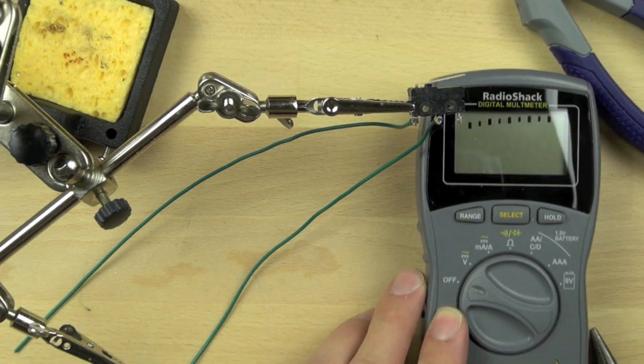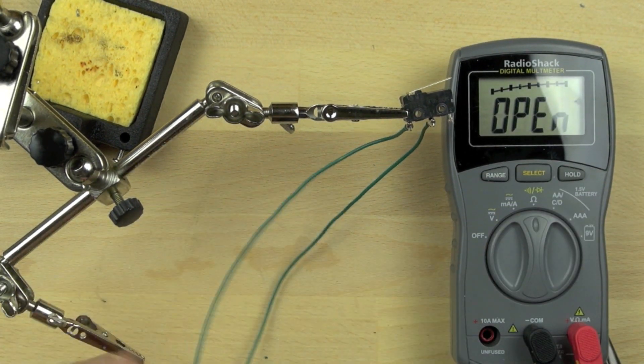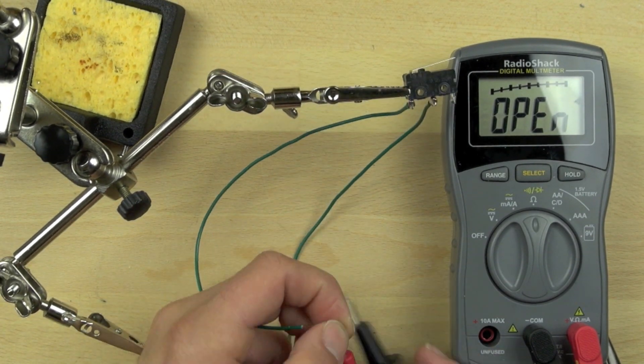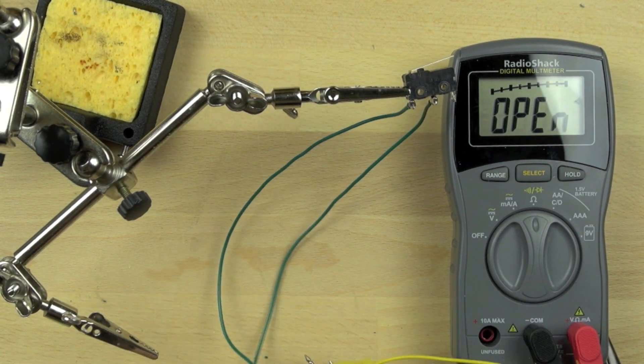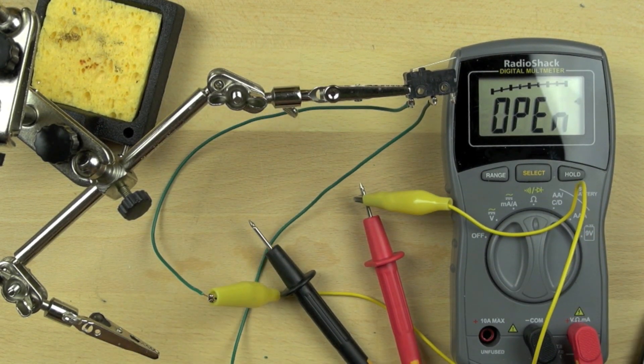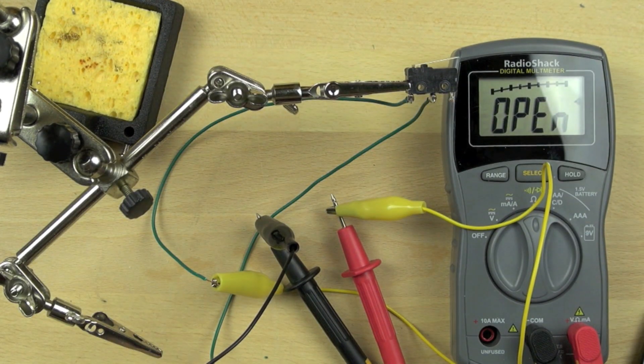To make sure that the connection's good and that we got everything soldered correctly, we're going to turn on our multimeter and check the ends of the wire. We'll strip the ends of the wire off there and use some alligator clips. We'll clip to the ends of the leads on our multimeter, and that way we can make sure that the switch is wired correctly and it's working.